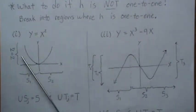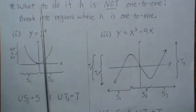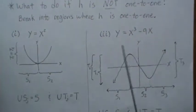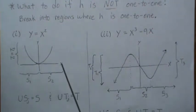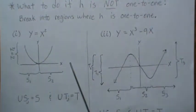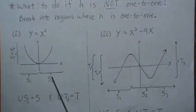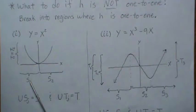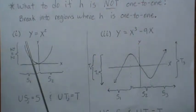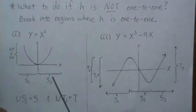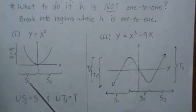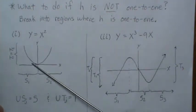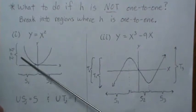Example one: Y equals X squared. This function passes the vertical line test but not the horizontal line test, so it's not one-to-one. The domain S must be partitioned into disjoint subsets whose union gives S back. Over region S1, it is a one-to-one function — passing both tests. Over S2 similarly. Once you find the partition, you observe the corresponding regions T1 and T2, which in this case happen to be the same region.